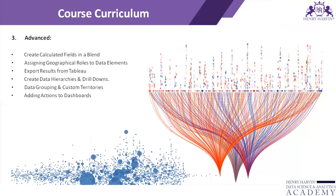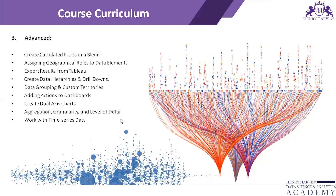We'll also cover how to add actions on dashboards, including action filters and action parameters. Then we'll see how to create dual axis charts — where you have two measures to show on the same graph. We'll discuss aggregation, granularity, and the level of detail concept in Tableau. Then we'll look at working with time series data, where you can plot date fields against continuous variables changing over time. Finally, we'll cover the analytics tab in Tableau, which offers forecasting, clustering, and trend lines.